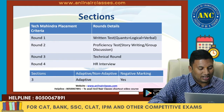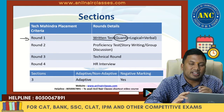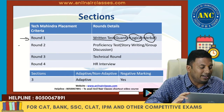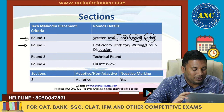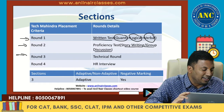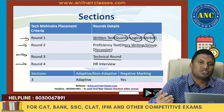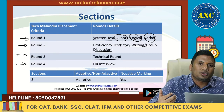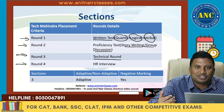Tech Mahindra checks a student's ability in various rounds. Round one consists of a written test with questions from quantitative aptitude, logical reasoning, and verbal ability. In round two there is story writing as well as group discussion. Round three is a technical round, and round four is an HR interview, which is all about checking your confidence levels and your ability to answer questions confidently.